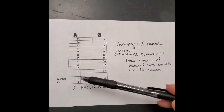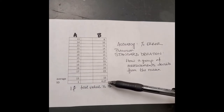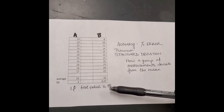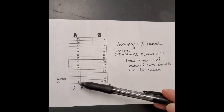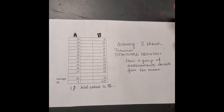So that means it's 15 ± 1 versus 15 ± 4.27. One standard deviation incorporates 68% of the data. Two standard deviations incorporate 95% of the data, and three standard deviations incorporate 99% of the data. The smaller the standard deviation, the more precise the measurements are.